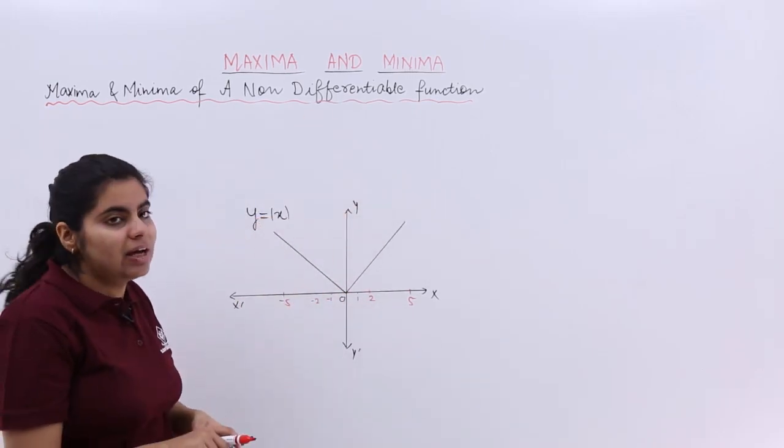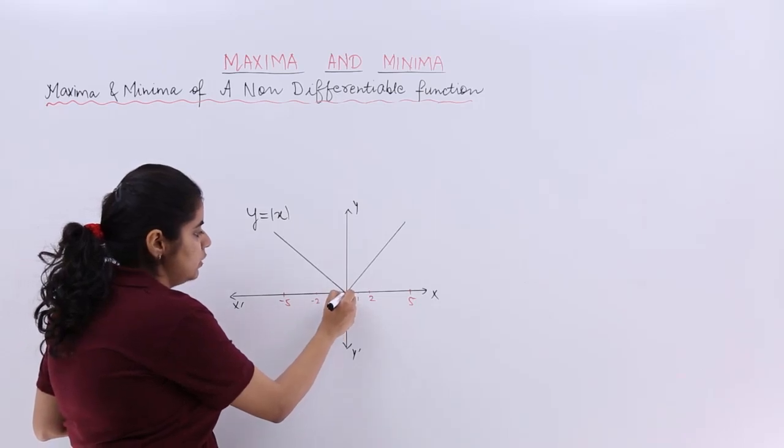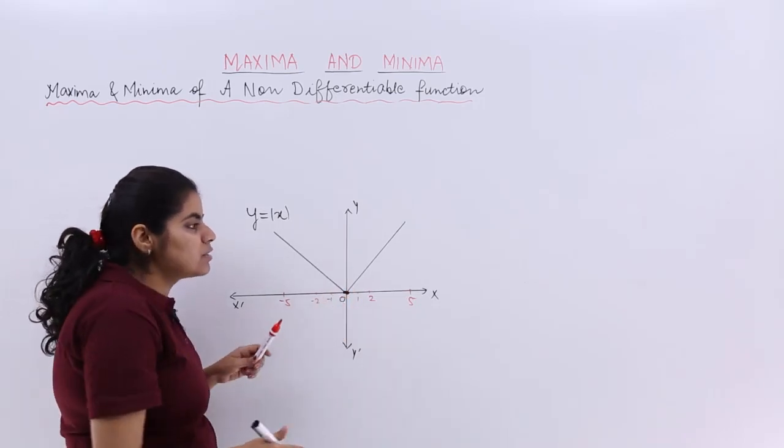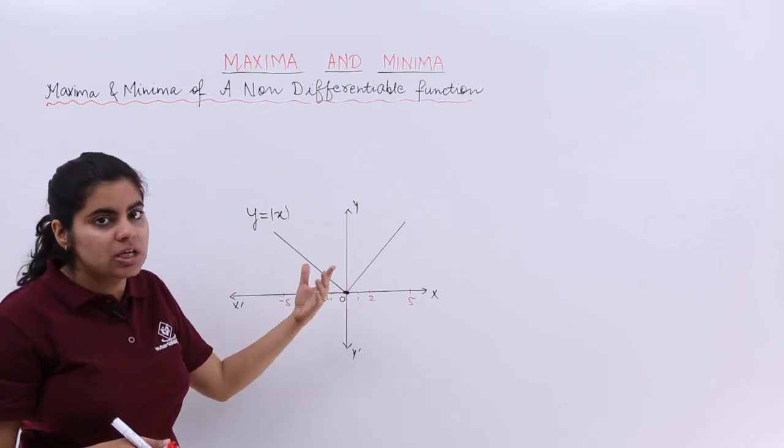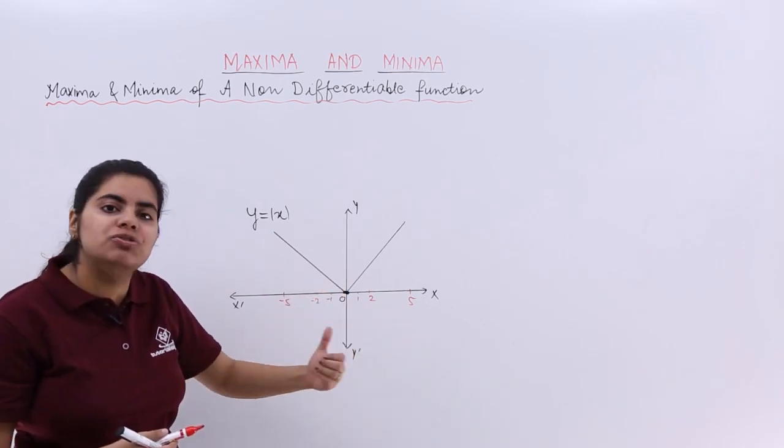So all values would be towards the positive direction of the y-axis, means increasing. The least value that you can ever get is zero. So although this function has a sharp point here, a pointed edge, so definitely this is not differentiable at x equals zero, which we have studied in continuity and differentiability.